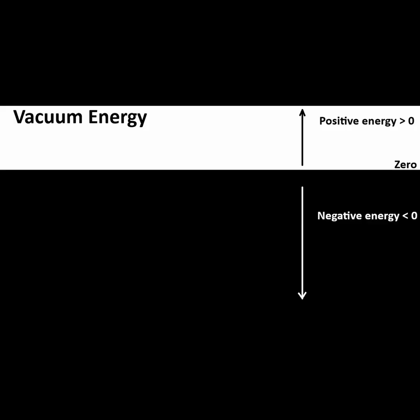However, the vacuum can also have states of negative energy — less than zero. For example, take the energy of an electron particle, but remove it from the vacuum.